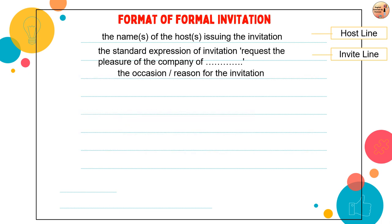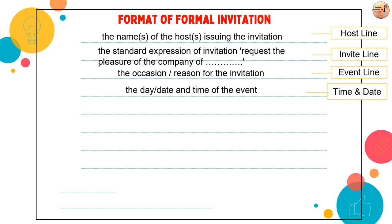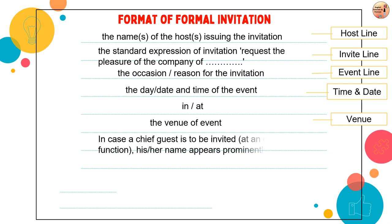Next, mention the purpose of the invitation — what is the occasion, like birthday, marriage, inauguration, celebration of a historic day, annual function, etc. Then date, day, and time of the event, followed by the venue. Students, remember: when day and date both are mentioned, the day should always come first. In case a VIP or chief guest is to be invited — for example, at an official or school event — his or her name appears prominently, though it is not mandatory in all cards.